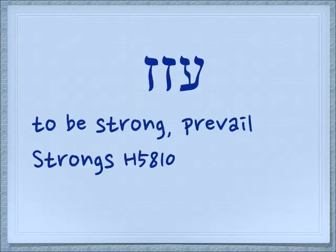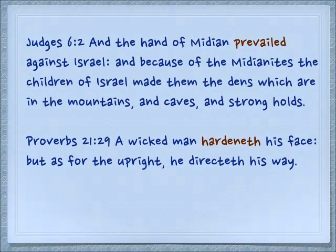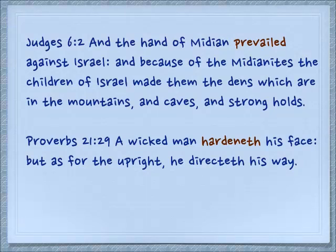There's a related verb root, azaz — Ayin, Zayin, Zayin. It's very common where the second letter will be doubled, and it means to be strong or to prevail. Judges 6:2: 'And the hand of Midian prevailed against Israel; because of the Midianites, the children of Israel made them the dens which are in the mountains, and caves and strongholds.' Proverbs 21:29: 'A wicked man hardeneth his face, but as for the upright, he directeth his way.' So we have this sense not only of being strong, but of forcing one's way, to be hard.